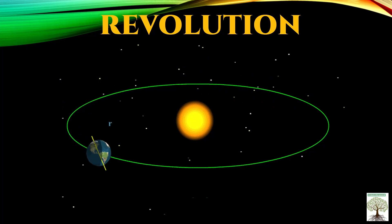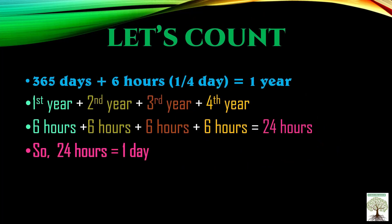So we count only 365 days, even though one year is actually 365 days plus 6 hours. After every fourth year: first year 6 hours, second year 6 hours, third year 6 hours, fourth year 6 hours — that adds up to 24 hours, which is equal to one day. So after every fourth year, one extra day is added in the month of February.